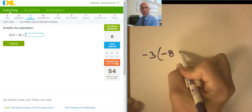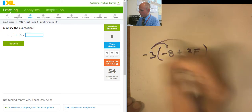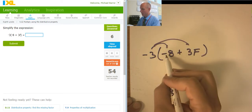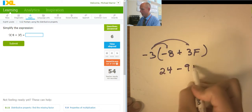-3(-8+3F). So, a negative times a negative is a positive. Negative times a negative is a positive 24 here. Negative times a positive is a negative 9F right there.